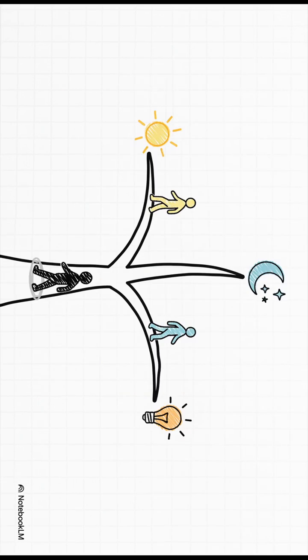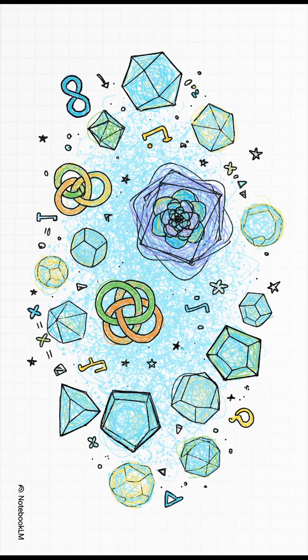Then there's Level 3: every choice you make splits reality, creating a new universe. Wild, right? And Level 4 is the grand finale. Here, any mathematically possible structure is a real universe.